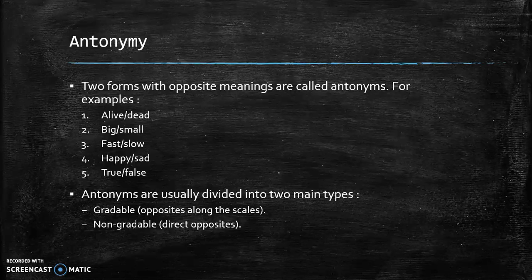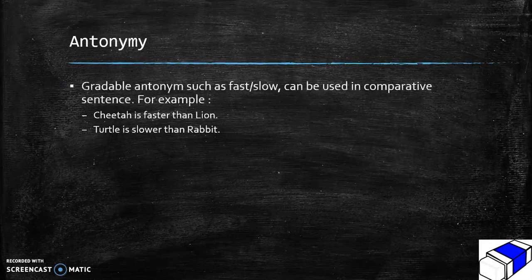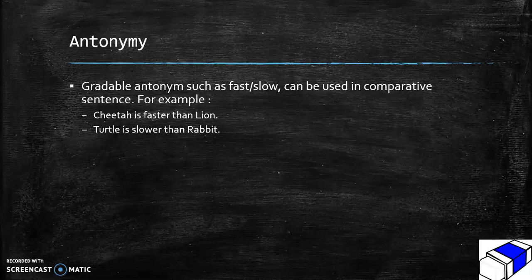Antonyms are usually divided into two main types: gradable and non-gradable. Gradable antonyms such as fast and slow can be used in comparative sentences — for example, 'A cheetah is faster than a lion' and 'A turtle is slower than a rabbit.'